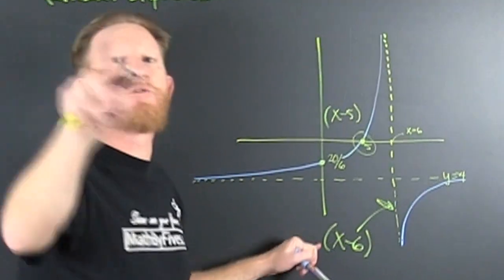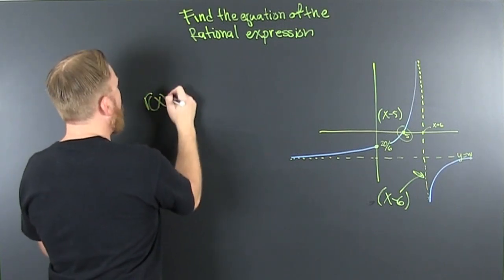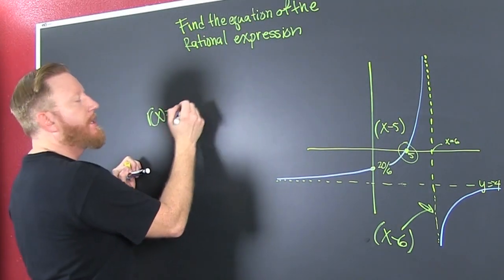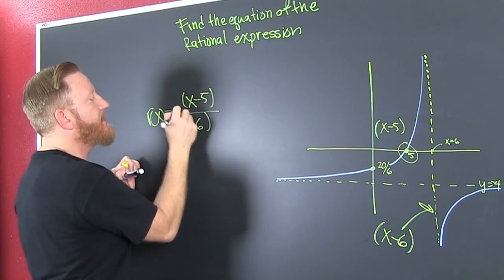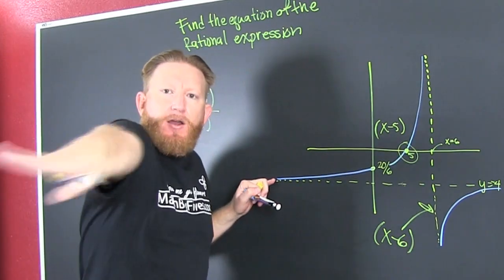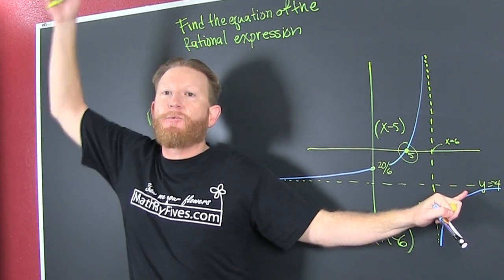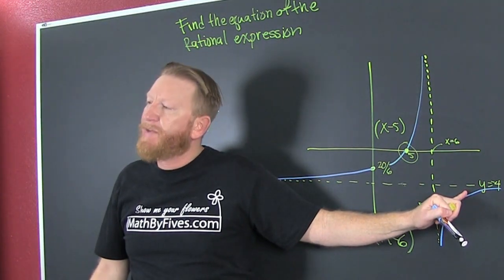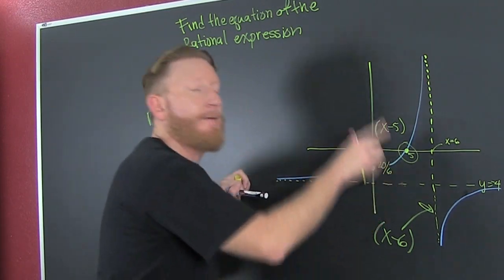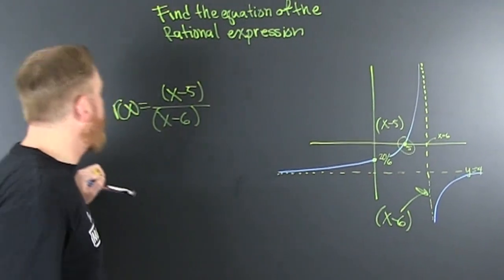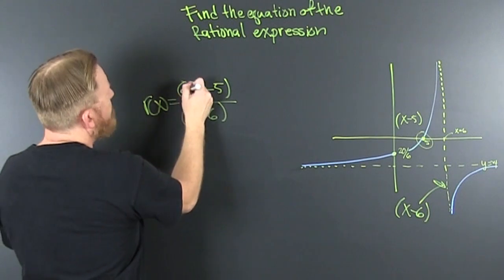So we know two things. I'll call it f — not r, because it's currently raining here in Southern California. I have x minus 5 in my numerator and x minus 6 in my denominator. That horizontal line happens when the numerator and denominator have the same degree. You can look that up in the rules for asymptotes. That means numerator and denominator have the same degree — degree one and degree one — so there is some number in front, and I'm going to call it A.